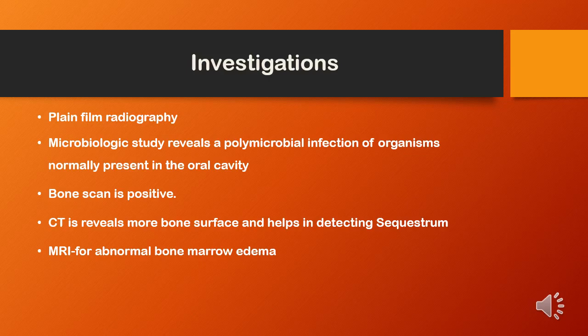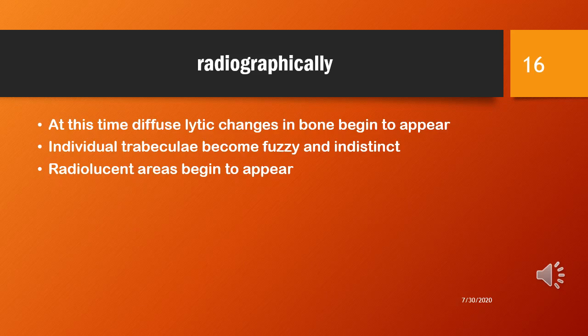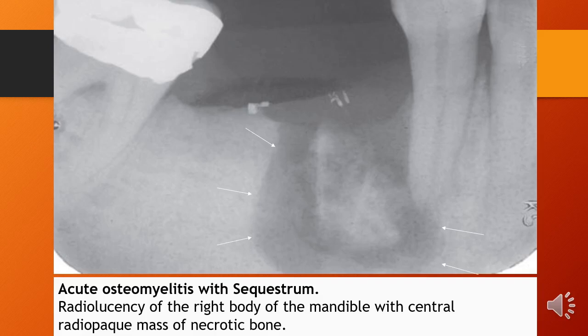MRI shows abnormal bone marrow edema. Radiographically, diffuse lytic changes begin to appear in the bone. Individual trabeculae become fuzzy and indistinct, and radiolucent areas begin to appear. This is the image of acute osteomyelitis showing formation of sequestrum in the body of the mandible, with a central radiopaque mass of necrotic bone, and those areas of radiolucency are indicated by the white arrows.